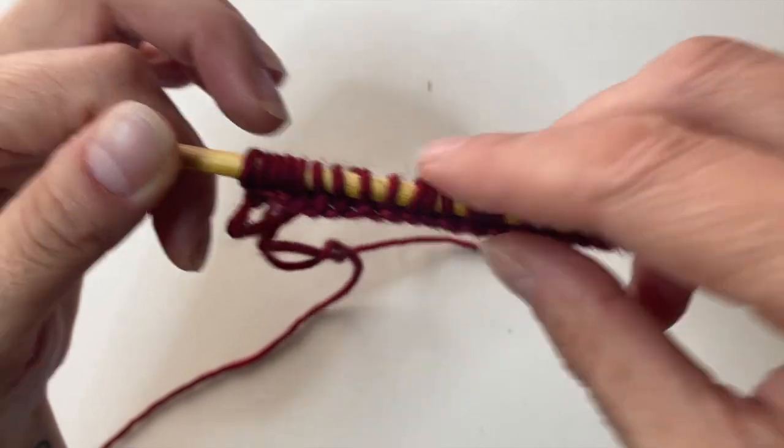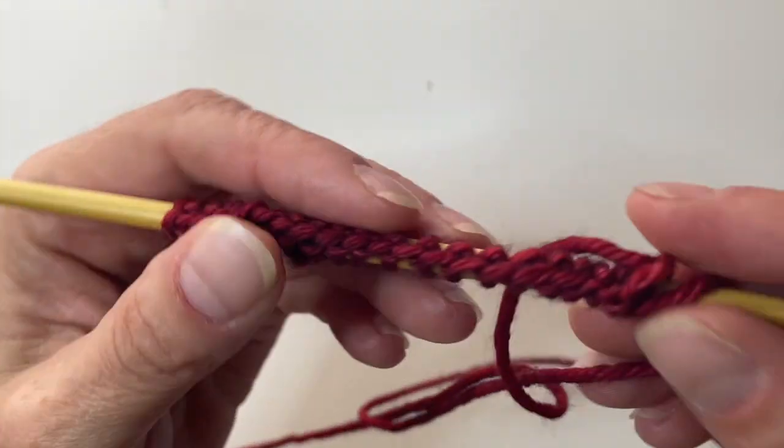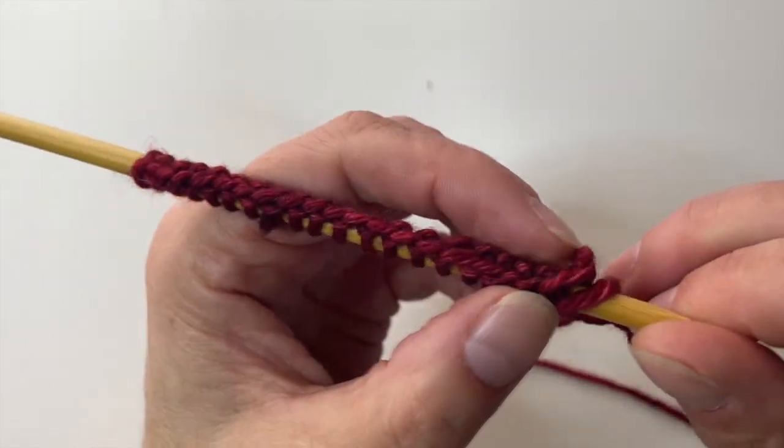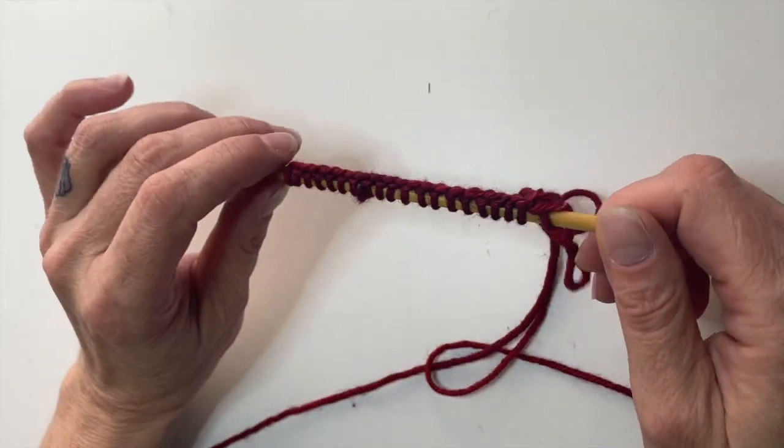And see, it looks really similar to the long tail cast on. But it just makes this nice little, it's more apparent when you start knitting off of it, but it's this cute little ridge. It's very pretty. And it's quite stretchy.